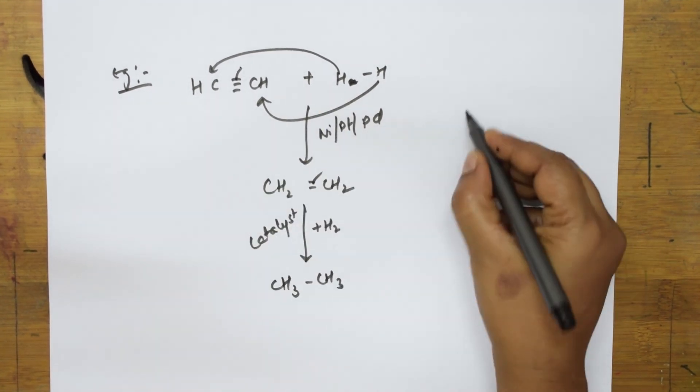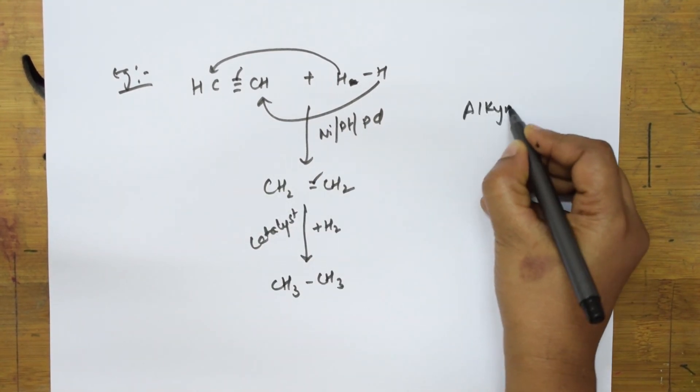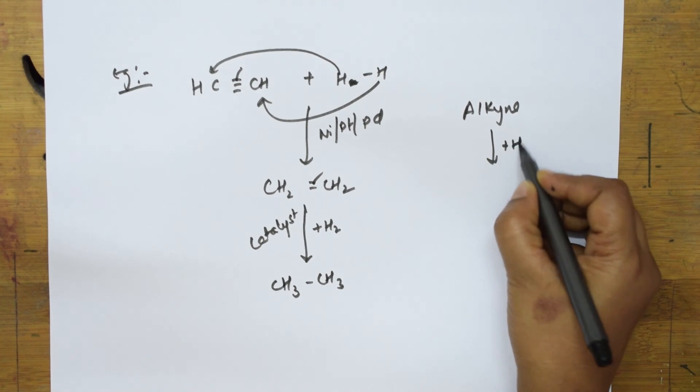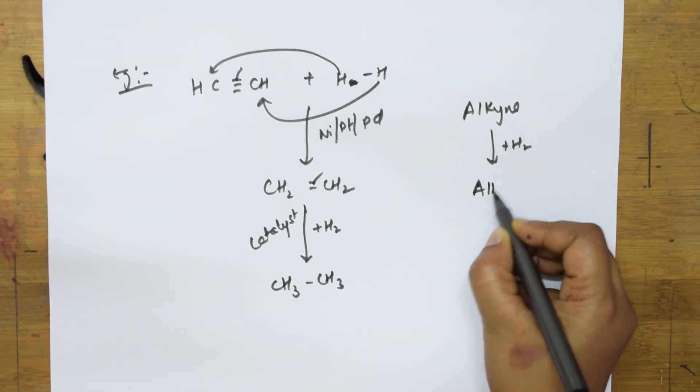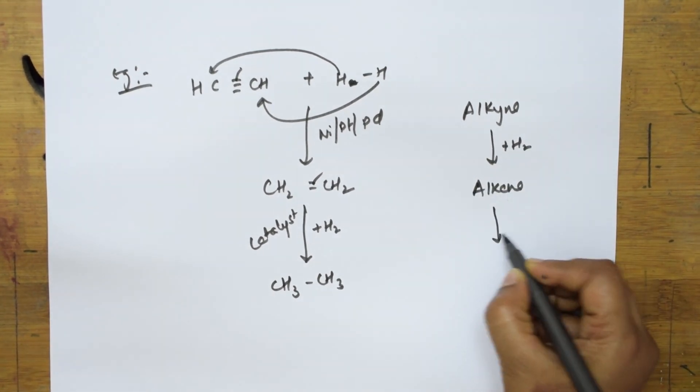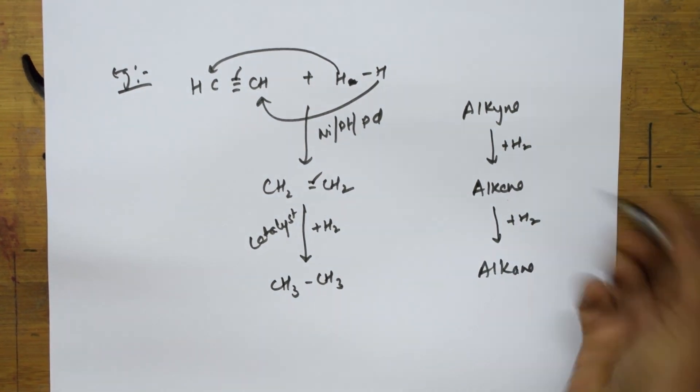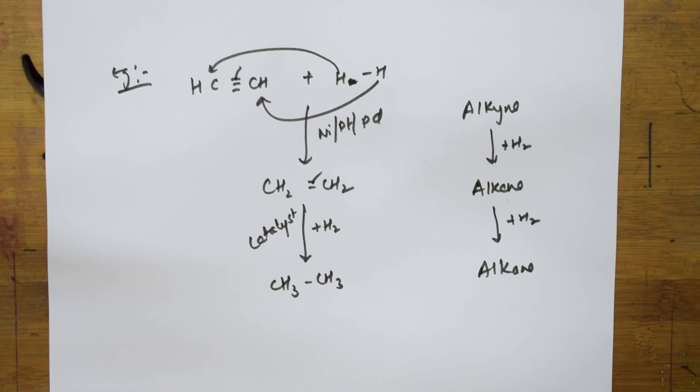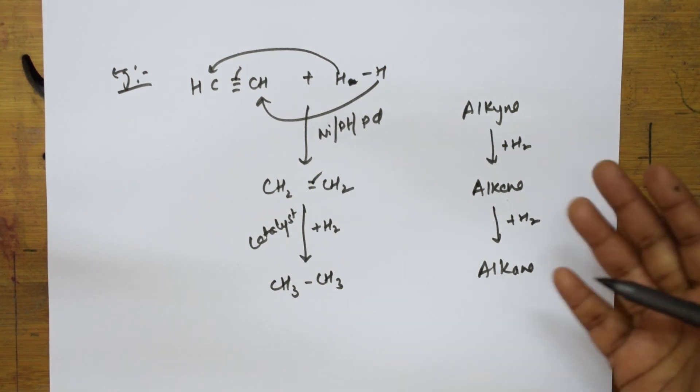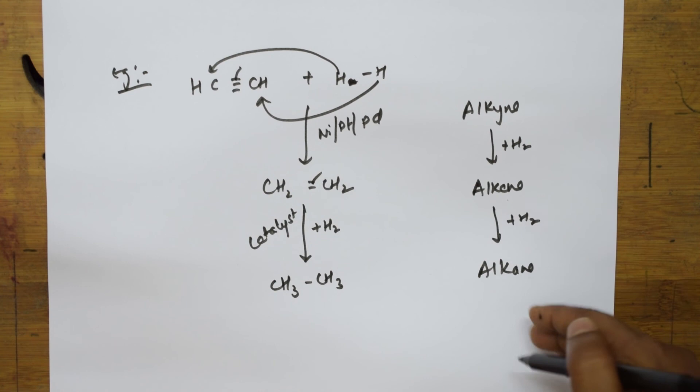Further, if I add hydrogen to this in the presence of a catalyst, then what will happen? This bond also is broken and I get alkane. This is alkyne. On hydrogenation gives me alkene. Alkene on further hydrogenation gives me alkane, using the catalyst which I have mentioned earlier. This is your hydrogenation reaction. This is how you are converting alkynes to alkenes, alkenes to alkanes using the respective catalyst.